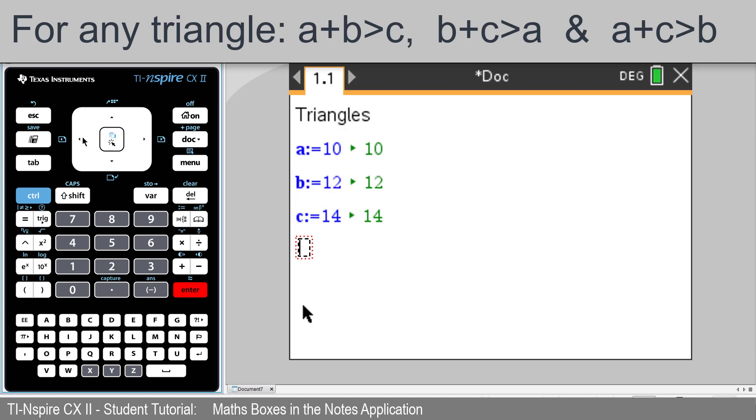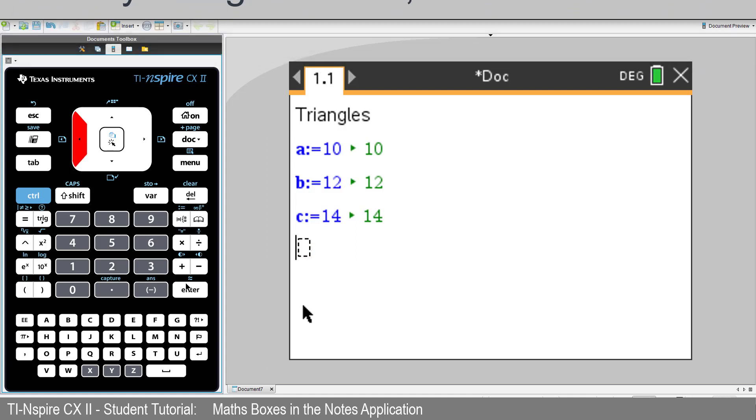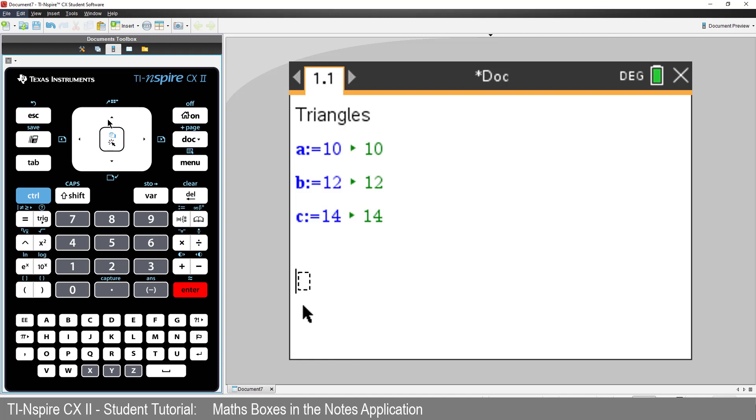We can now calculate the perimeter of the triangle. I'll type a heading perimeter. And inside the maths box, I'll say P is assigned equal to A plus B plus C. And press enter.